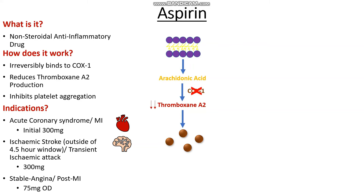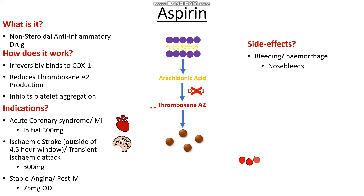So now that we've seen when we use aspirin, what are some side effects? Well, physiologically we're using aspirin to stop platelets clotting, so we're inhibiting primary hemostasis. The most obvious thing that aspirin could lead to is bleeding or hemorrhaging, and this may present in various ways, such as nosebleeds, for instance.